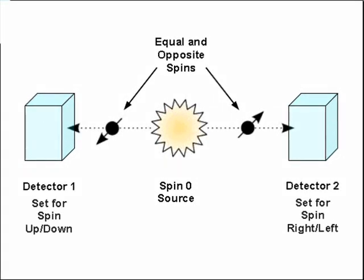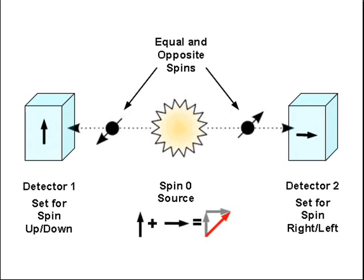But now suppose that we set one of our detectors, say detector 2, to measure spin right or spin left. Then, by the laws of quantum mechanics, it's going to measure either right or left spin. The problem is that when we add the right or left spin to the spin up or spin down measured at the other detector, there is no way for the sum to be zero. This would violate the law of conservation of angular momentum unless we do something to compensate.